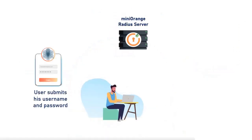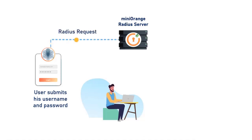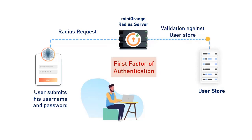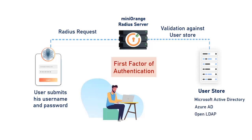User submits his username and password, which is accepted by the Mini Orange Radius server as a Radius request. The user can be validated against any user directory like Microsoft Active Directory, Azure AD, OpenLDAP, or you can keep users in the Mini Orange user directory as well.